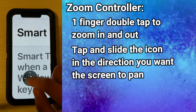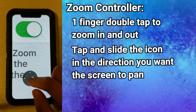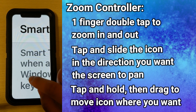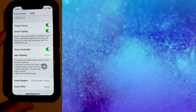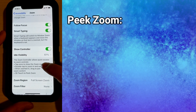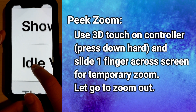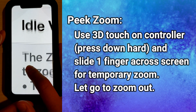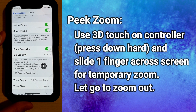I really like this feature because using three fingers to pan the screen blocks a lot of what is on the screen. You can move this icon by tapping and holding on it and dragging it to where you want it on the screen. If you tap and hold on the controller and use 3D Touch — pressing it hard — you can slide your finger around and zoom in and pan with just one finger, and once you let go it zooms right back out.